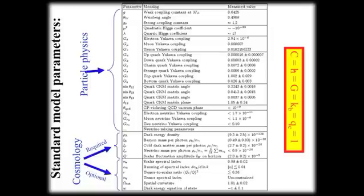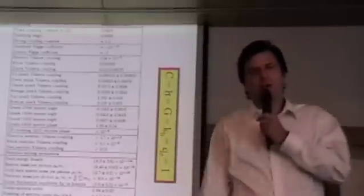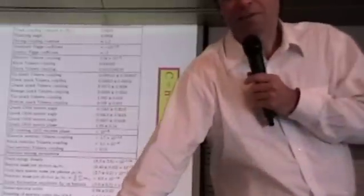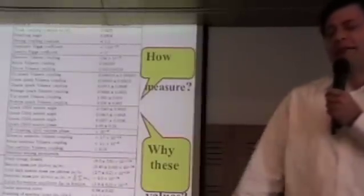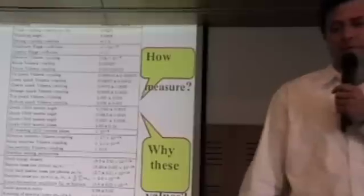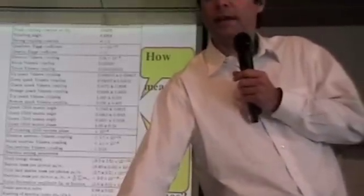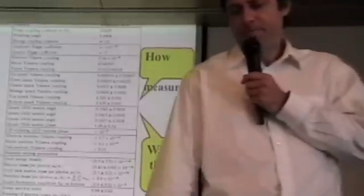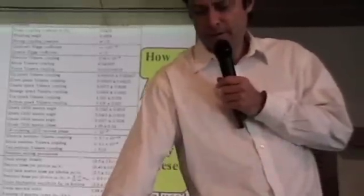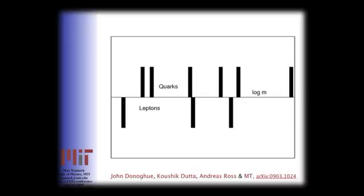When you stare at these numbers, there are a couple of very obvious questions that jump at you. First of all, how would you measure them? We know how to measure most of them. And then why do we have those values? And more generally, what these numbers actually tell us. We have had discussion about what they tell us. Many of them looked like random numbers.